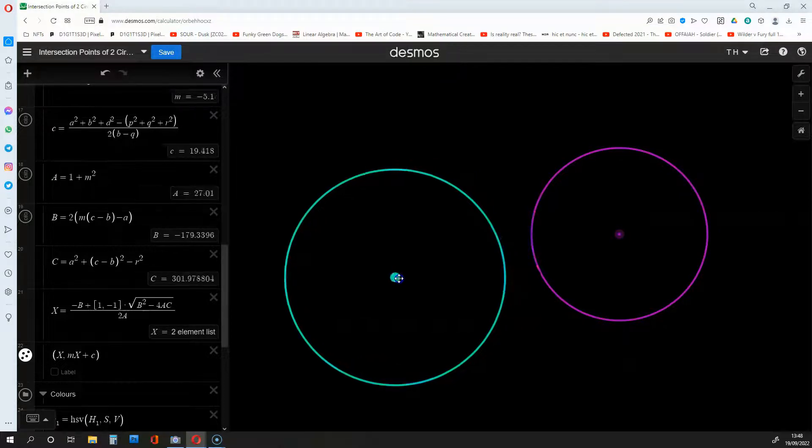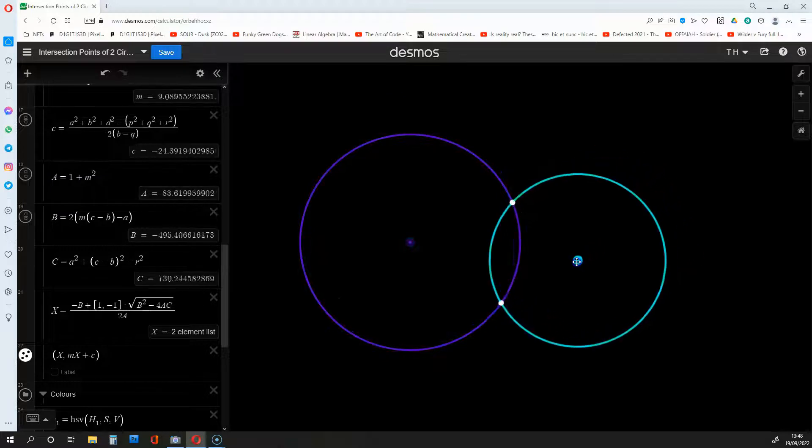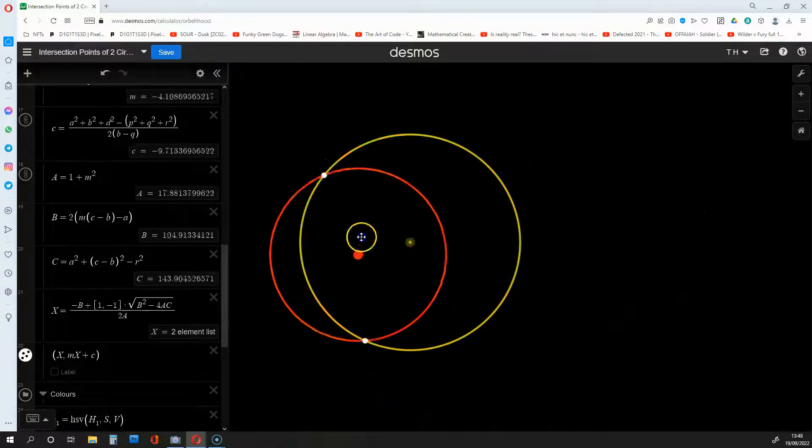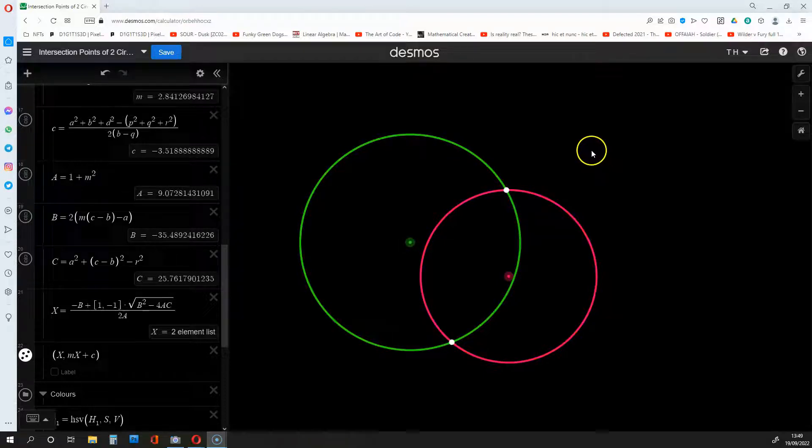As you can see, even if I change where these circles are, these intersections still appear. With that said, let's dive into the work and see you on the other side.